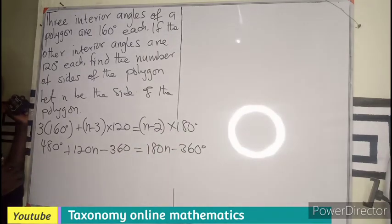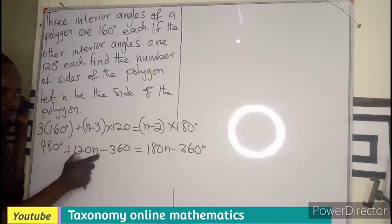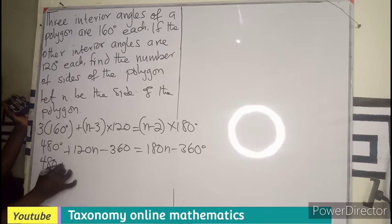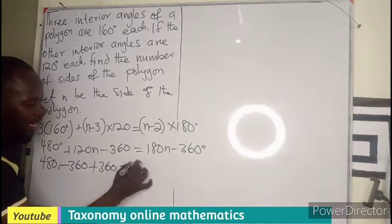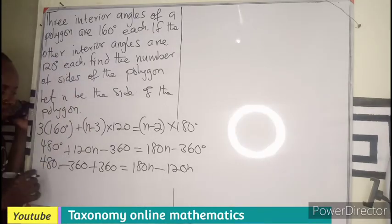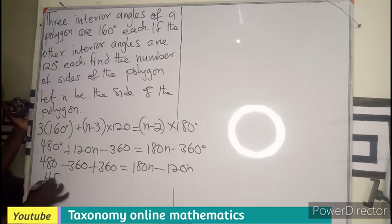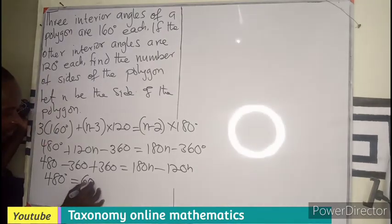What do we do? Let's try and see if we can group items. I will send this 120 to the right. So 480 minus 360, this minus becomes plus 360 equals to 180N, then positive 120 becomes negative 120N. Negative 360 plus 360 will cancel out. So we are left with only 480 degrees equals to 60N.